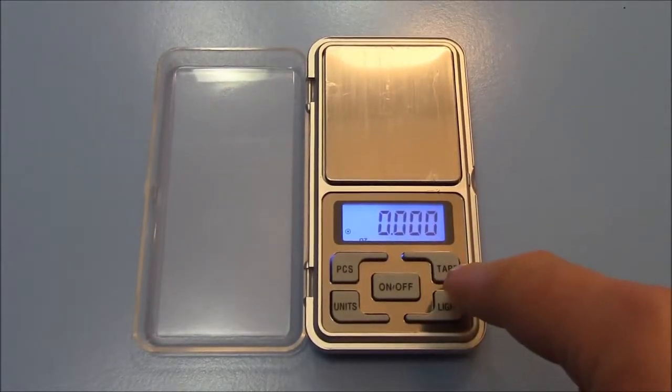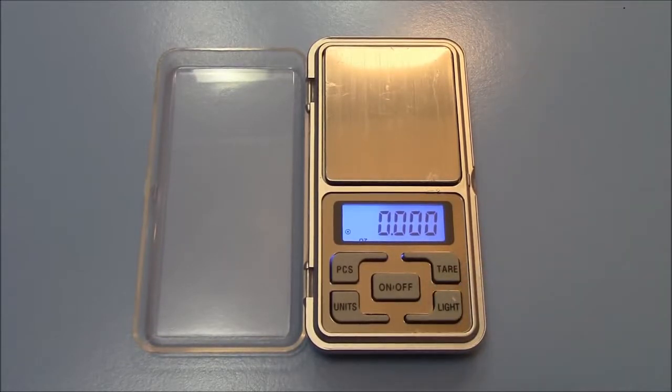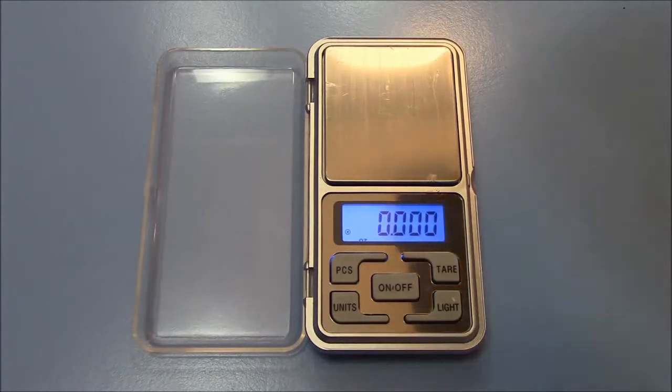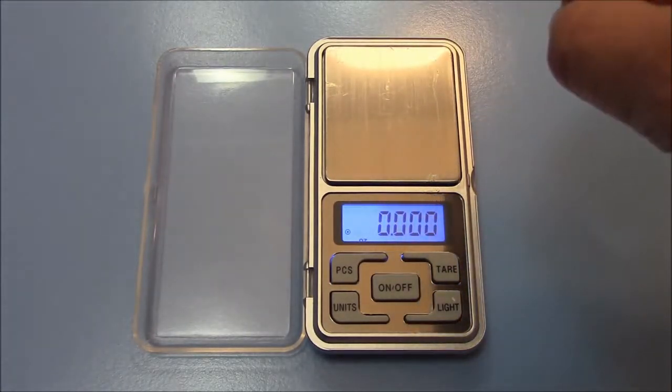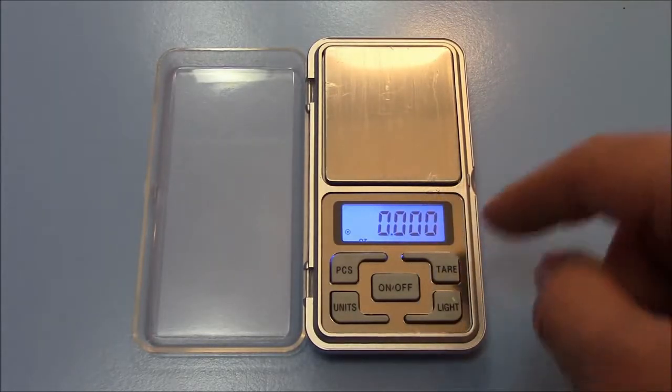Now, tare means weighing products that are inside something. If you have something in a container, you would put something on the scale and then press this button down. After the container is on top, you would put the item inside to weigh the weight of the item that's inside the container, not including the container. That's how that would work.